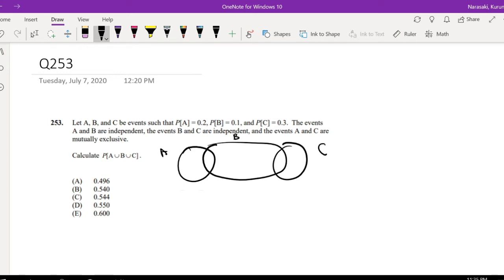Okay, calculate A and B and A or B or C. Okay, so we know A is 0.2, we know B is 0.1, and C is 0.3. So we know that A and B are independent.